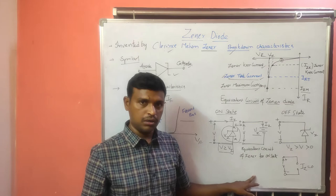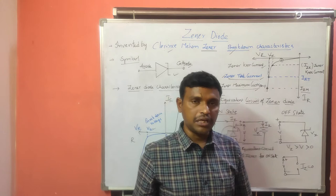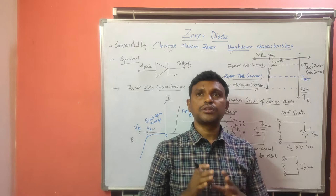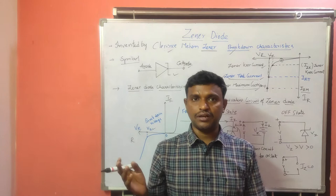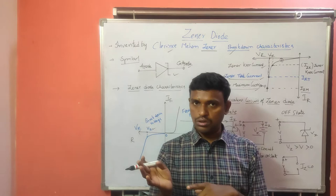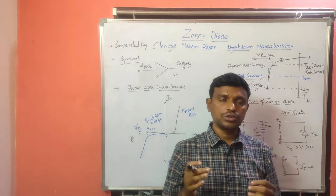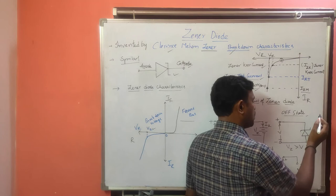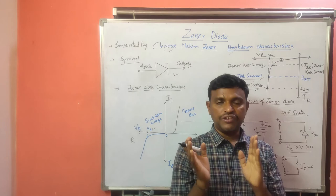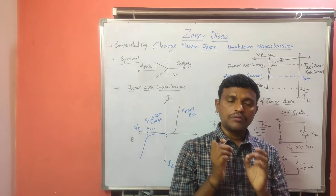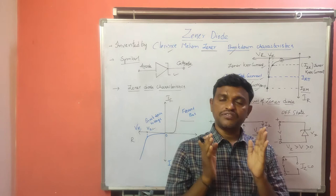Now we will go with the OFF state. When we call OFF state, for a normal switch when the switch is off, there is no current flowing. Similarly, the OFF state condition for the GINA diode is when the applied voltage V is between 0 and VZ — that is, V is greater than 0 and less than the junction breakdown voltage. Then that state is the OFF state.